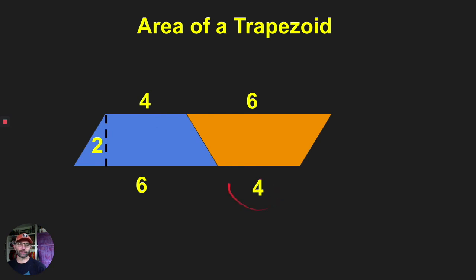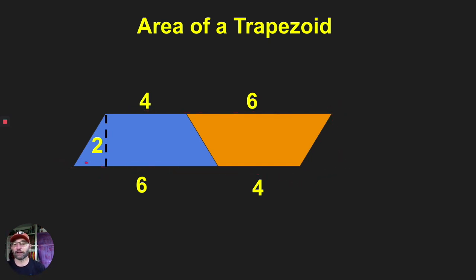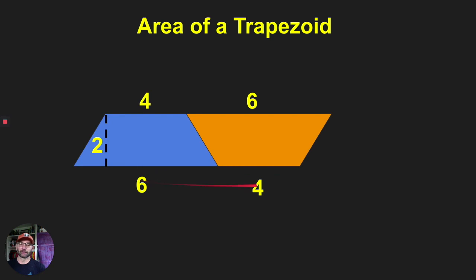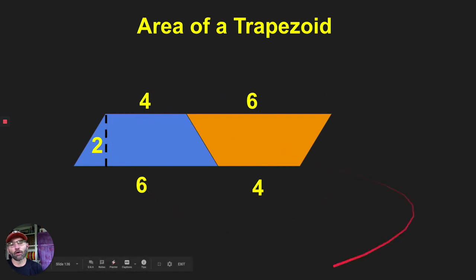So now we have a parallelogram. Base one is on the bottom and base two is on the side. To find the area of a parallelogram it's just base times height. This big base is base one plus base two: six plus four is ten, times two is twenty. That gives us the area of the whole parallelogram — but we only want half of it, the trapezoid.